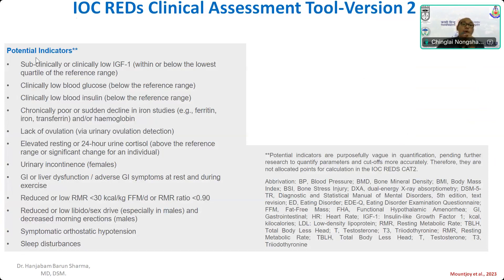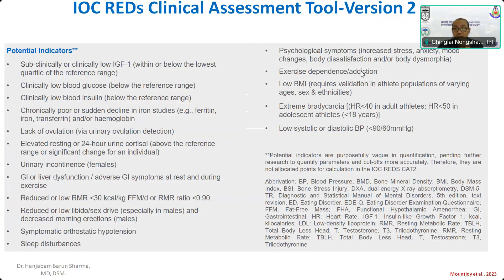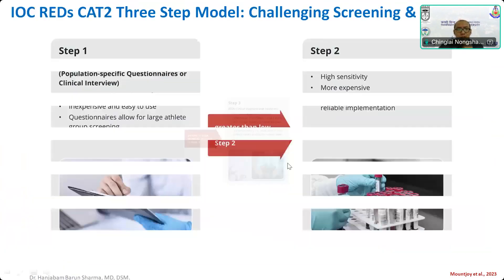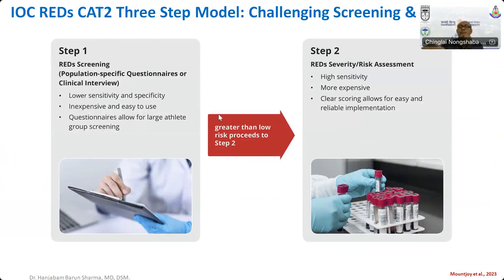Apart from primary and secondary indicators, there are potential indicators which are not counted in the current risk calculation but are important and under active research. These include low IGF-1, clinically low blood sugar or insulin levels, iron abnormalities, GIT or liver dysfunction, urinary incontinence, low heart rate variability, sleep disturbance, symptomatic orthostatic hypotension, exercise dependence or addiction, body dissatisfaction or body dysmorphia, low BMI, extreme bradycardia, or low systolic or diastolic blood pressure.